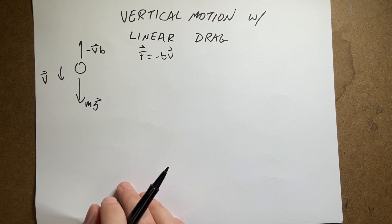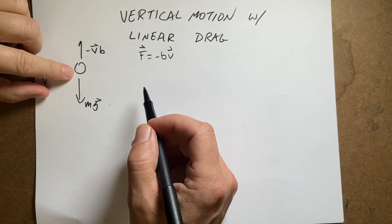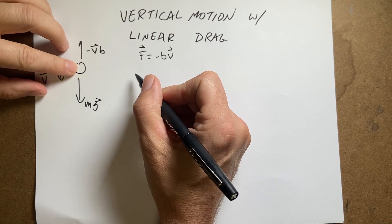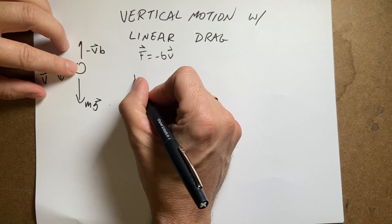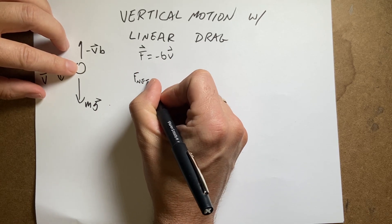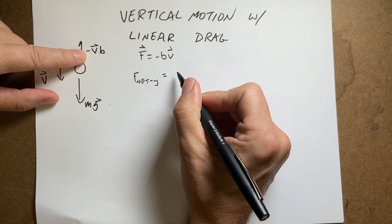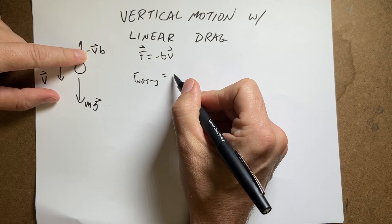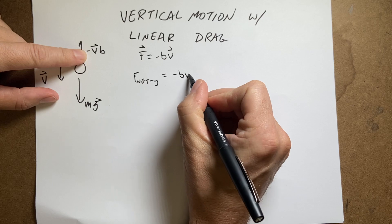There were some people complaining last time saying it was a one-dimensional ball. So let's write the F_net equation. F_net in the Y direction is going to be equal to this force, which is negative BV.